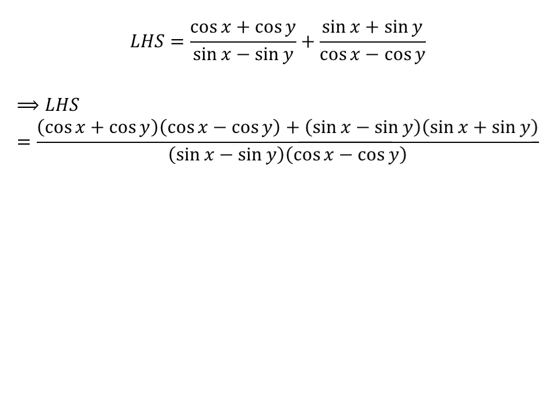Adding the fractions gives us the left hand side equal to: cosine of x plus cosine of y times cosine of x minus cosine of y, plus sine of x plus sine of y times sine of x minus sine of y, all upon sine of x minus sine of y times cosine of x minus cosine of y.